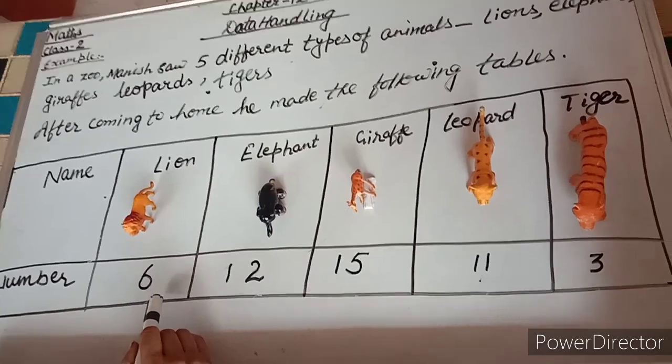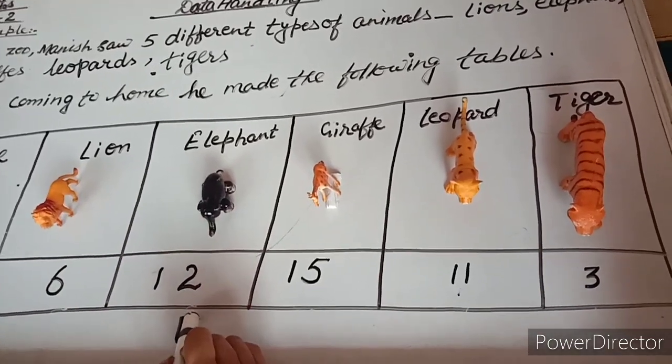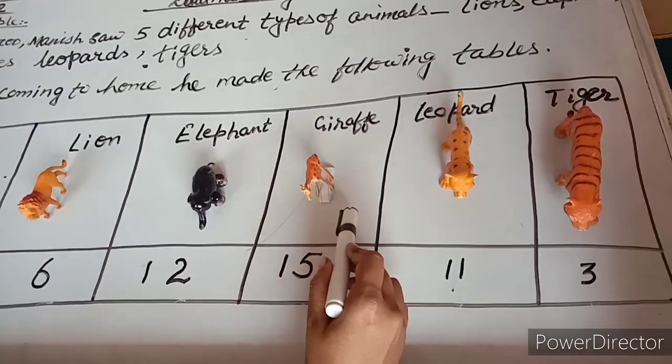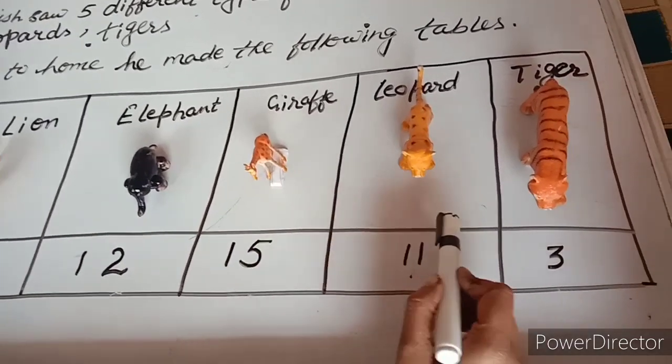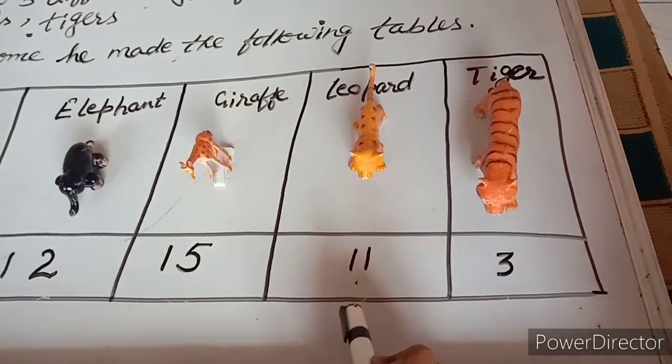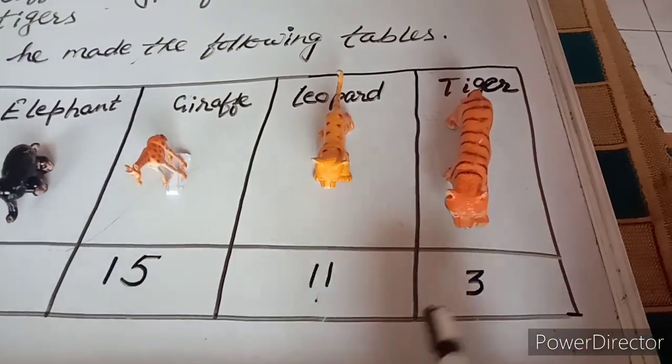The table shows: Lion — 6, Elephant — 12, Giraffe — 15, Leopard — 11, Tiger — 3.